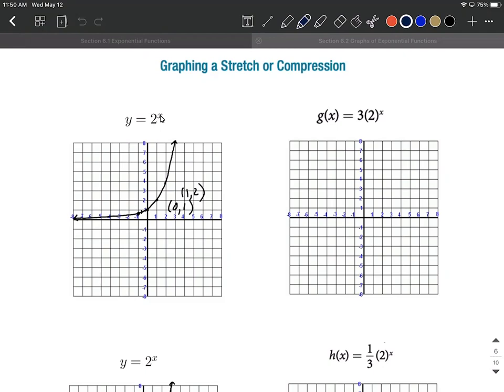If you plug in 0 for x, 2^0 equals 1. The second key point: when we plug in 1, we have 2^1, which equals 2.